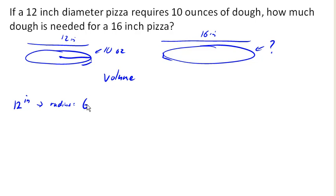so the area of the top will be pi times 6 squared, or about 113 square inches. For the larger pizza, the radius will be 8 inches, and so the area will be pi times 8 squared, or about 201 square inches.